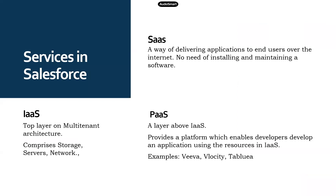Usually any cloud platform — not just Salesforce — provides two or three different services. IaaS is the top layer of this whole multi-tenant architecture. IaaS means Infrastructure as a Service, which basically means storage, servers, or networks — all together is called infrastructure — and utilizing this, you try to build some software or a platform.